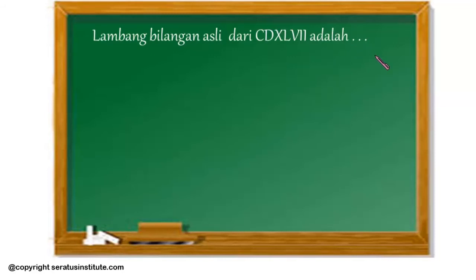Nah Sobat 100, masih ingat tentang angka dasar bilangan Romawi? Kalau C itu berapa? Iya, 100, betul sekali. Kemudian D itu berapa? 500, betul sekali. Kemudian X adalah 10, L adalah 50, V adalah 5, dan I adalah 1.